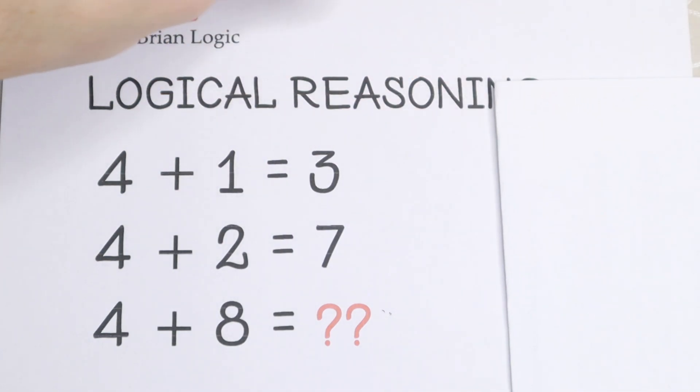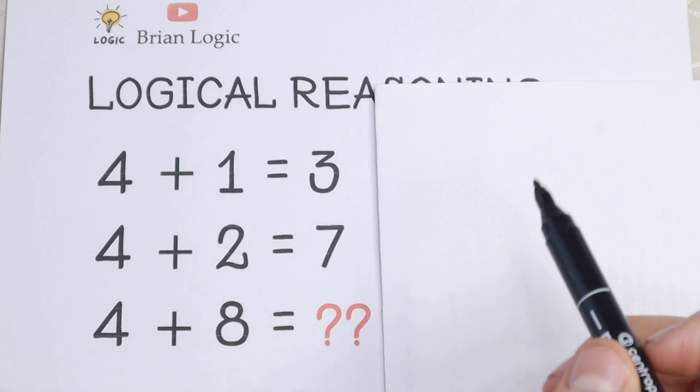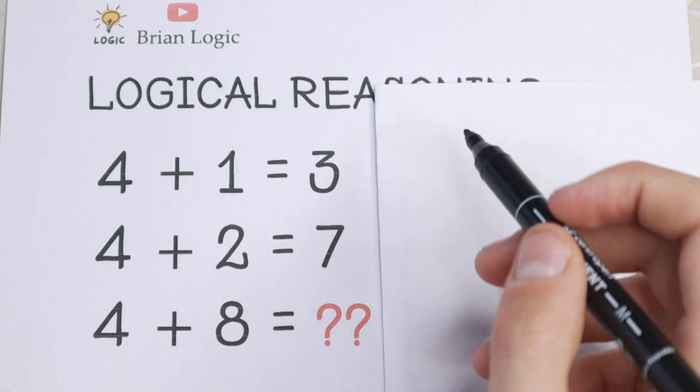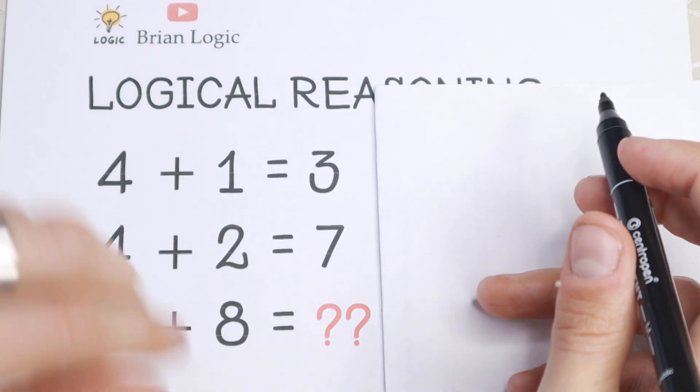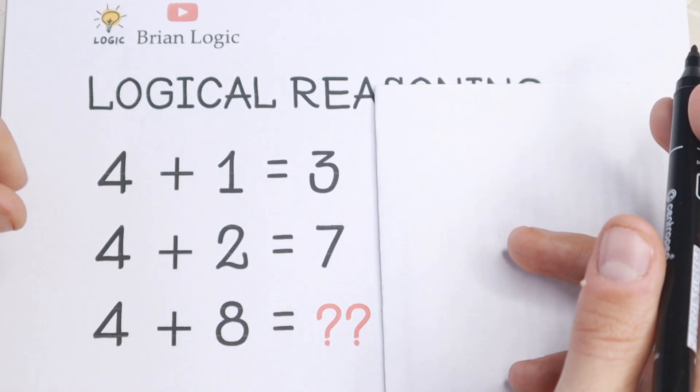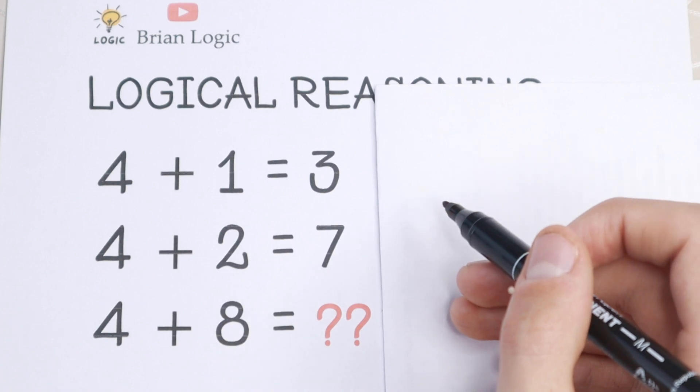So let's try to solve it. Choose one option and write it in a comment. How can we solve it? Take a look, we know that 4 plus 1 equals 3, this is incorrect, but we also know that we can change the sign or number. The main thing is to see the pattern between all of these numbers.